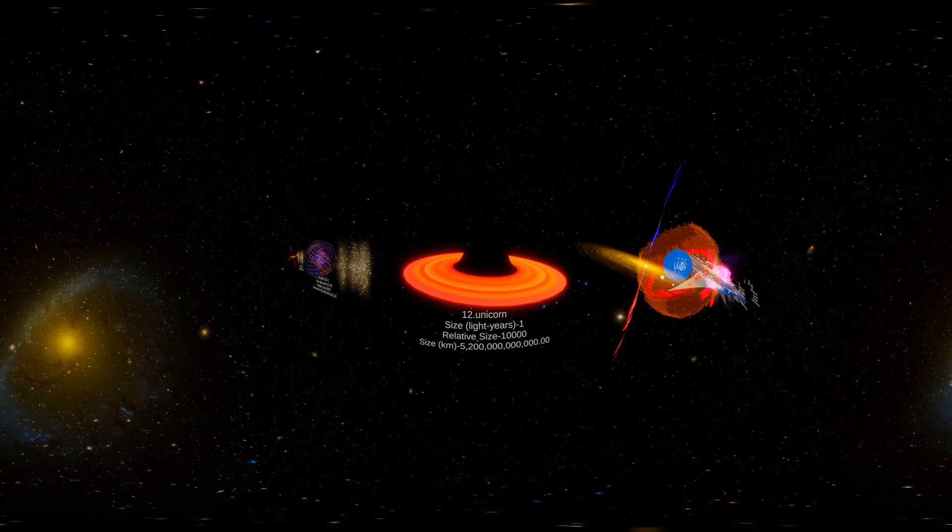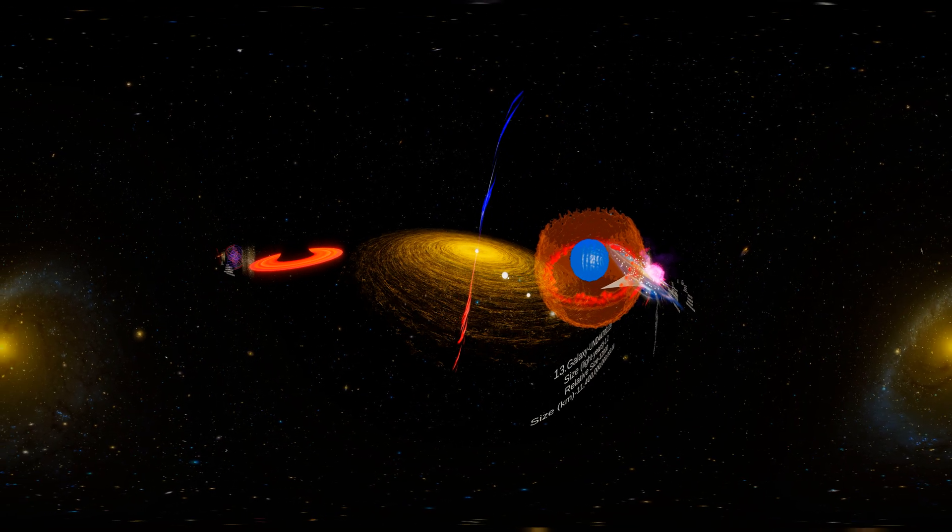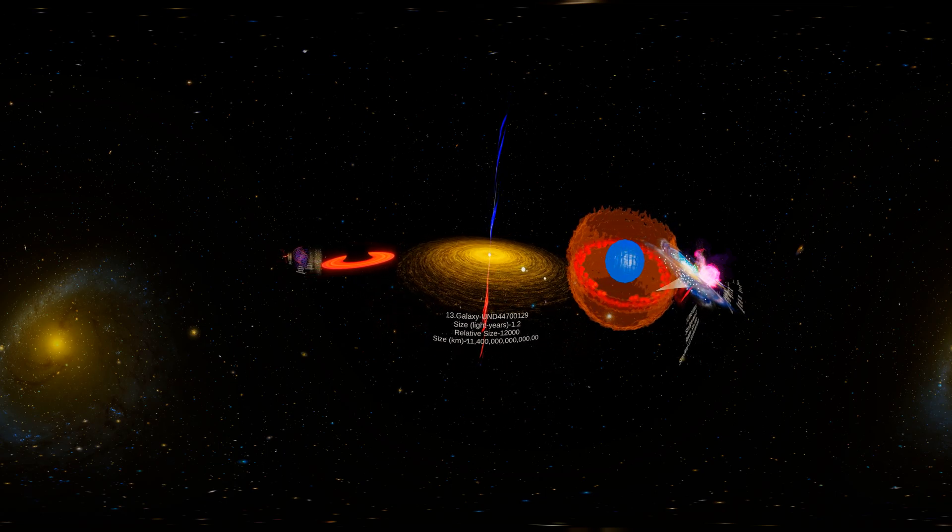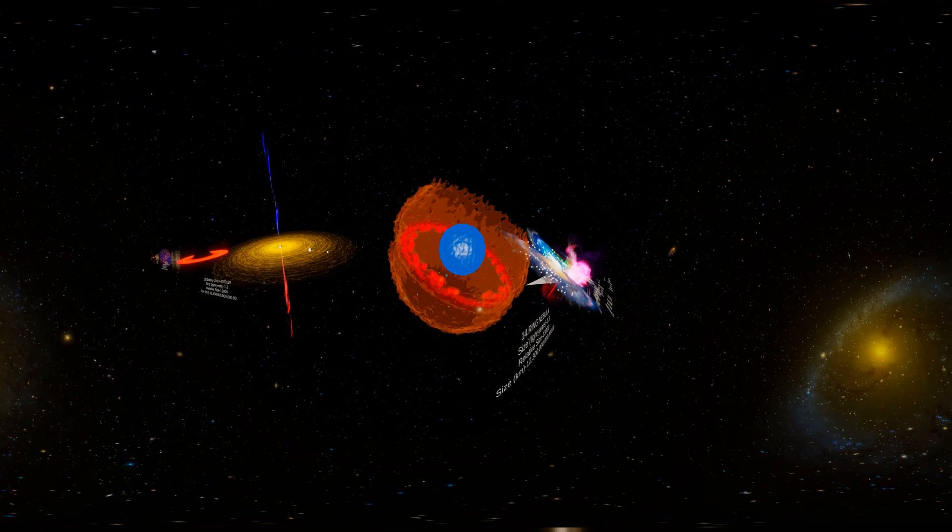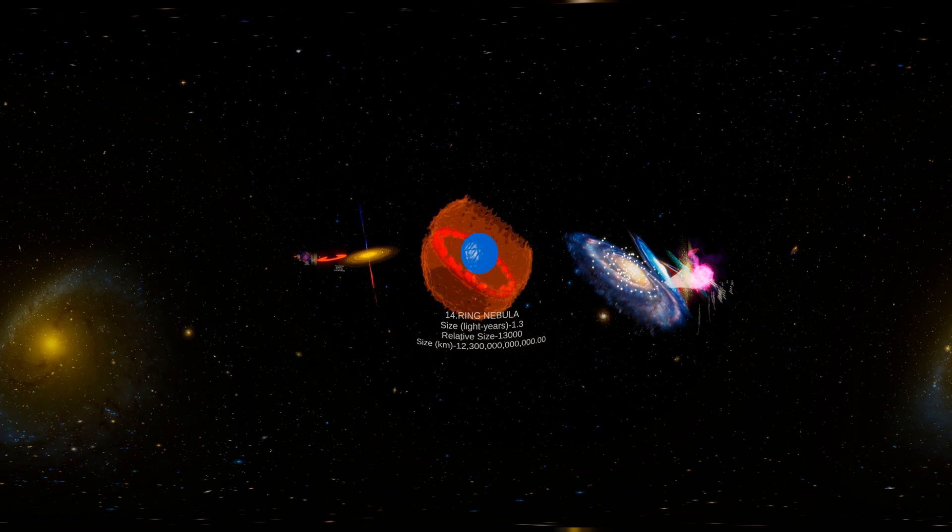Unicorn, size light years 1, Galaxy UGC 4470129, size light years 1.2, Ring Nebula, size light years 1.3